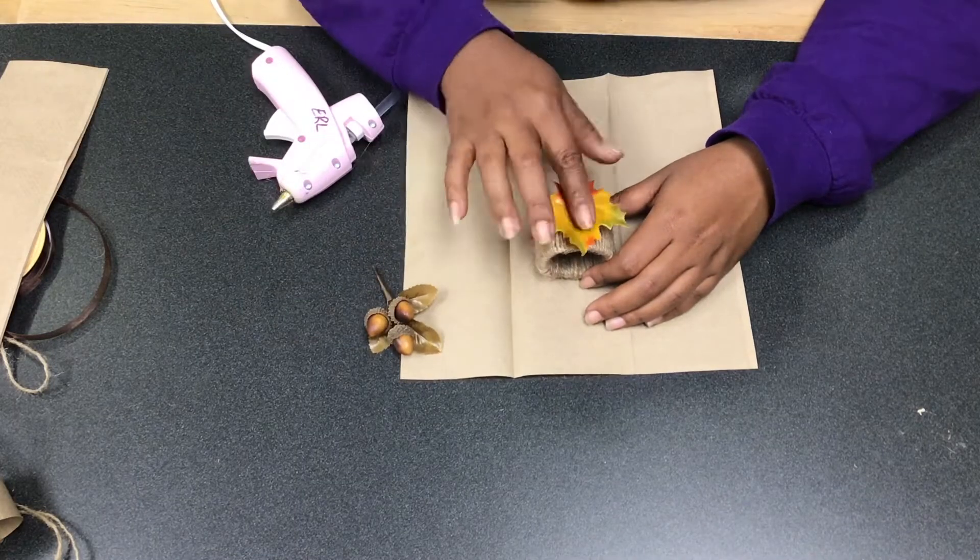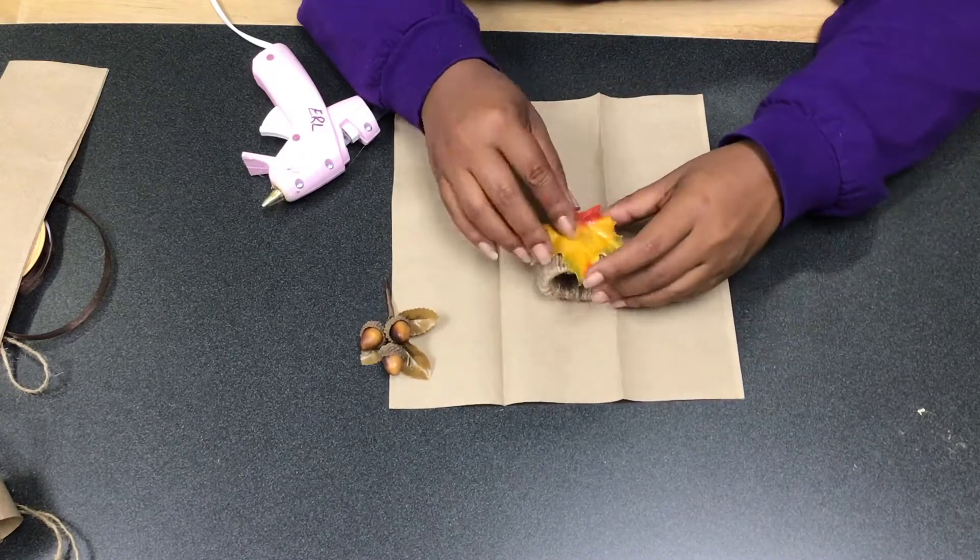Glue a decoration on the outside of the napkin holder. I'm using fall miniatures and a leaf.